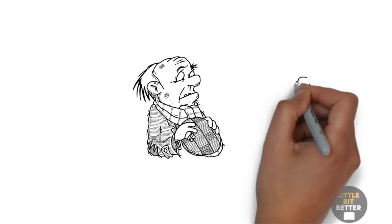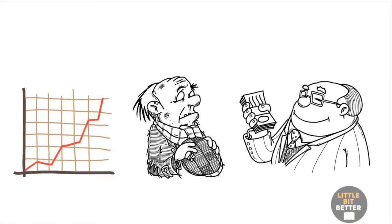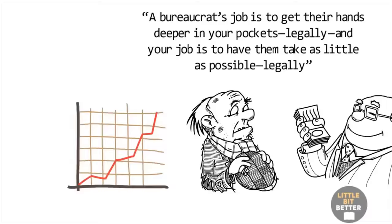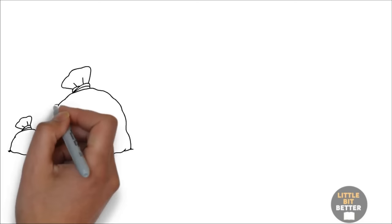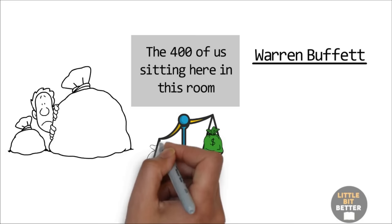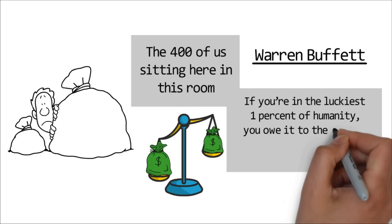Since taxes keep going up, rich dad's philosophy was, a bureaucrat's job is to get their hands deeper in your pockets, legally. And your job is to have them take as little as possible, legally. Unfortunately, it is often the people who earn the least who pay the highest percentage in taxes. At one event, Warren Buffett had this to say about taxes. The 400 of us sitting here in this room pay a lower part of our income in taxes than our receptionists or cleaning ladies do. If you're in the luckiest 1% of humanity, you owe it to the rest of humanity to think about the other 99%.